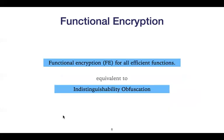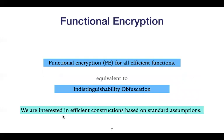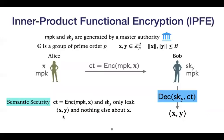We know that functional encryption is roughly equivalent to indistinguishability obfuscation. But since obfuscation candidates are inefficient, in practice we want to look at efficient constructions based on standard assumptions. And a well-explored direction from previous work is to look at inner product functional encryption.